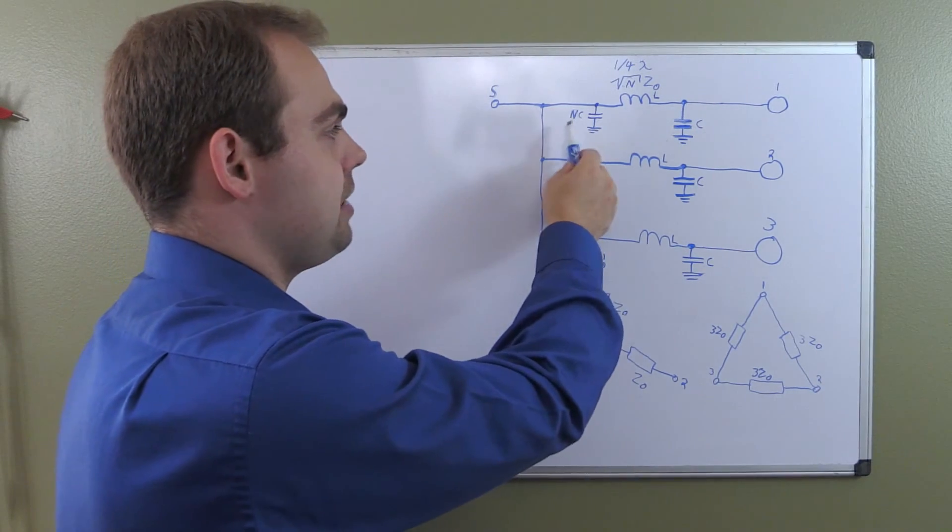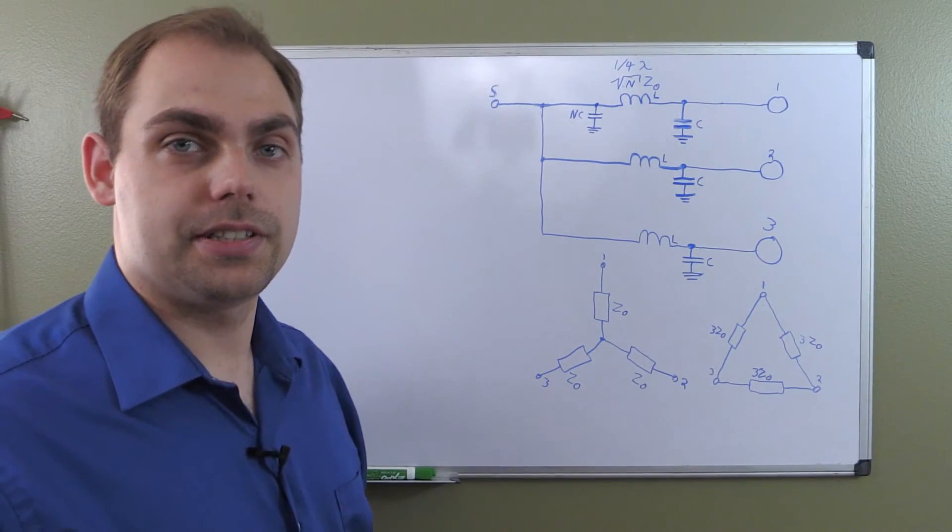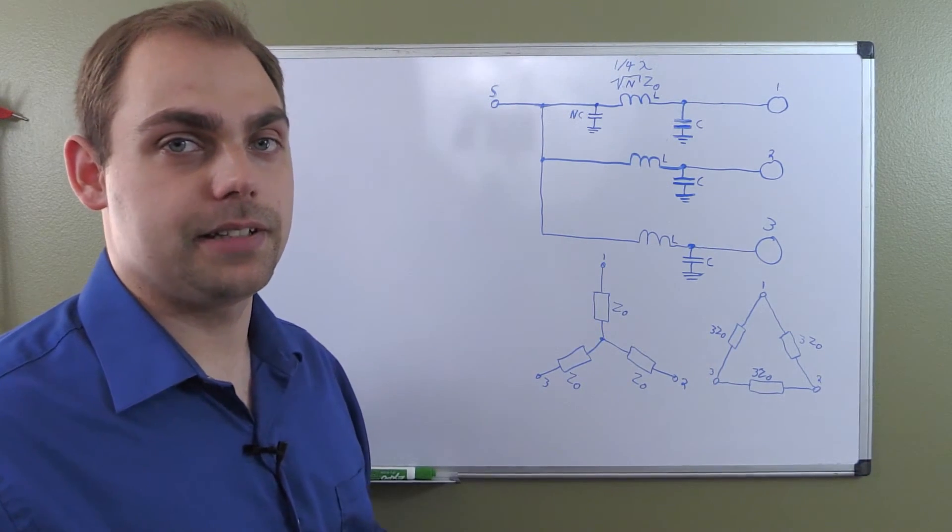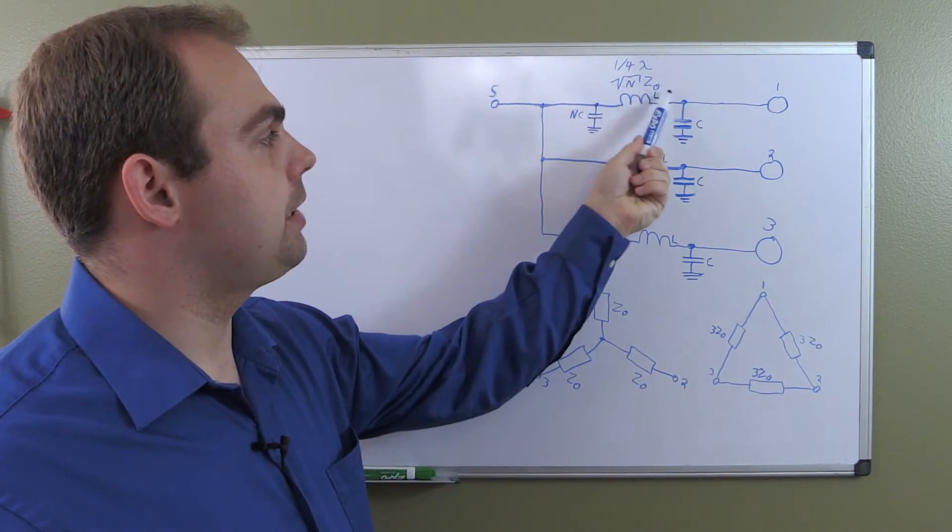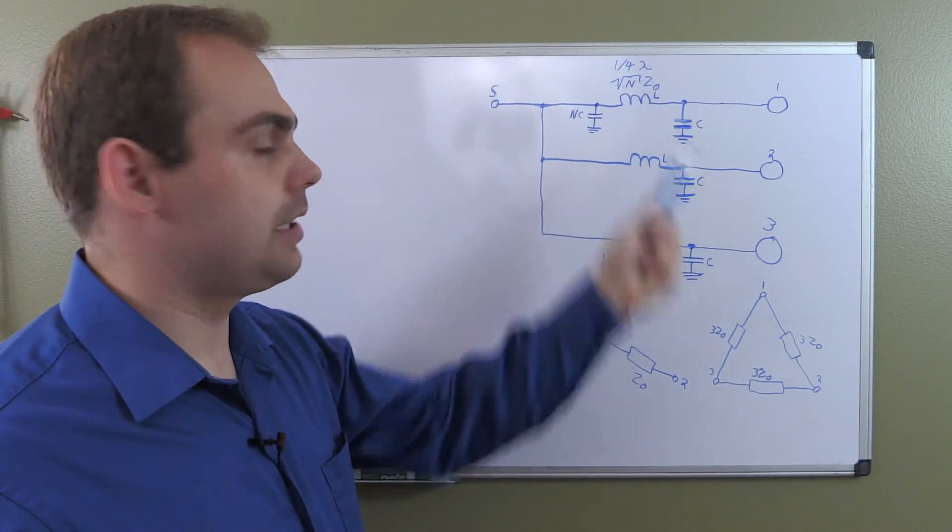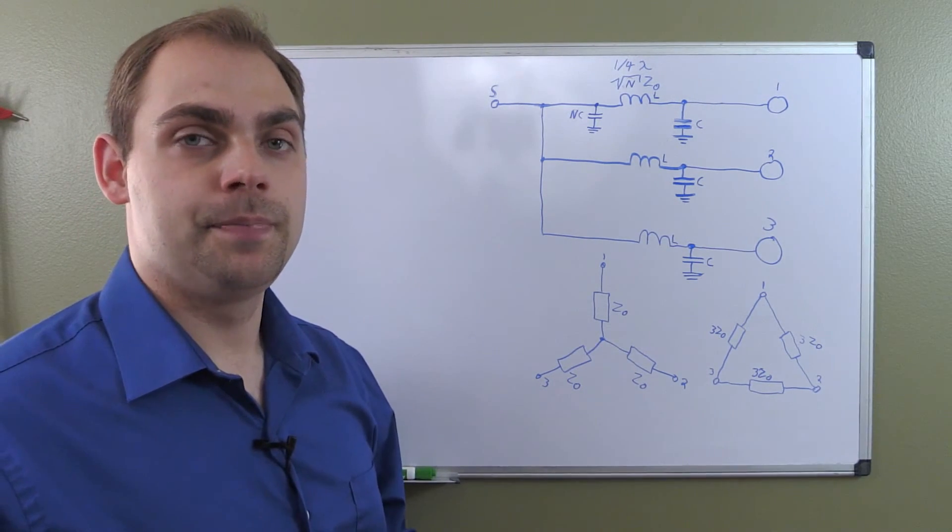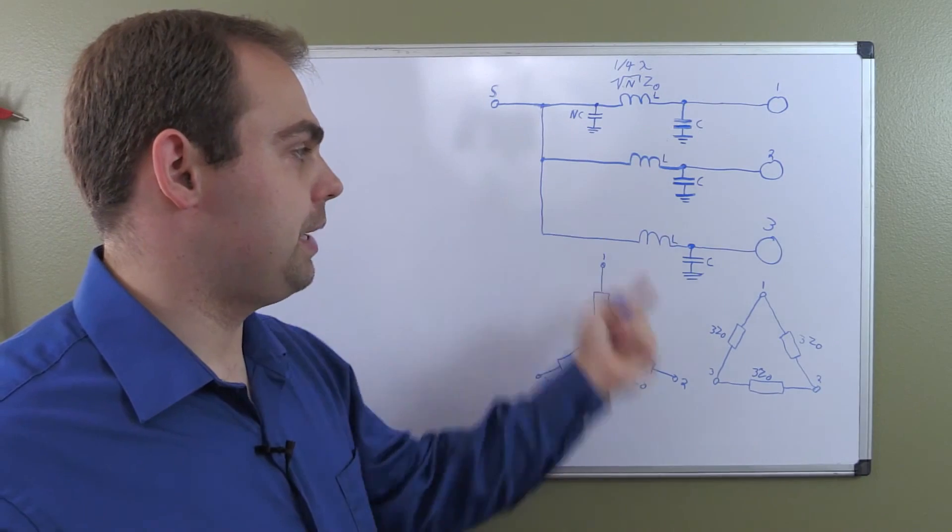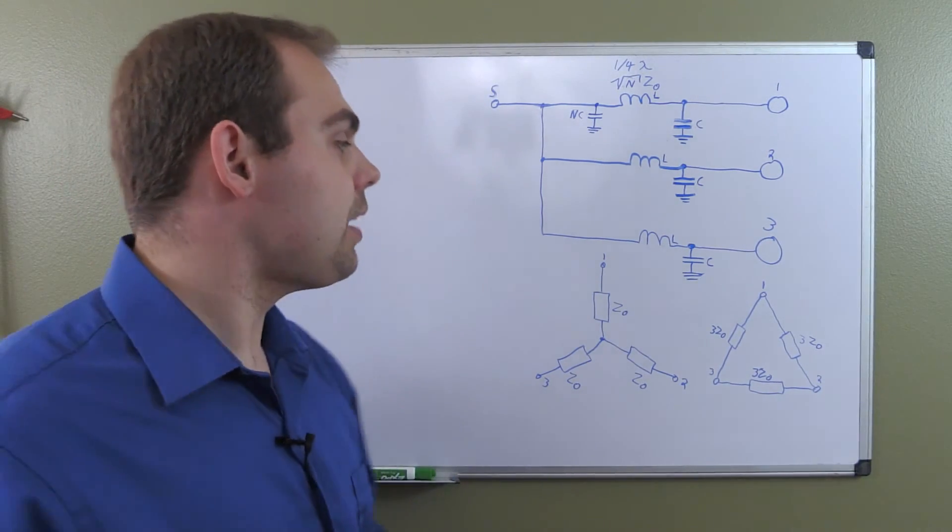So, the capacitors, n times C, and the output capacitors remain just C. And we calculate them the exact same way. You calculate the needed reactance of this inductor the way we did it in the two-way Wilkinson divider. And then you just go ahead and calculate the capacitors the exact same way. It's really not difficult at all.